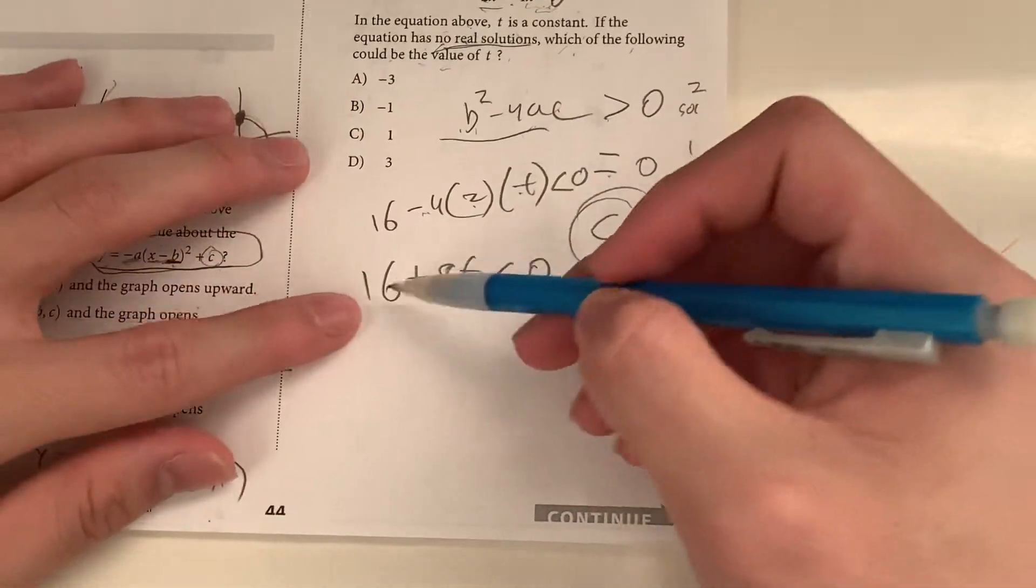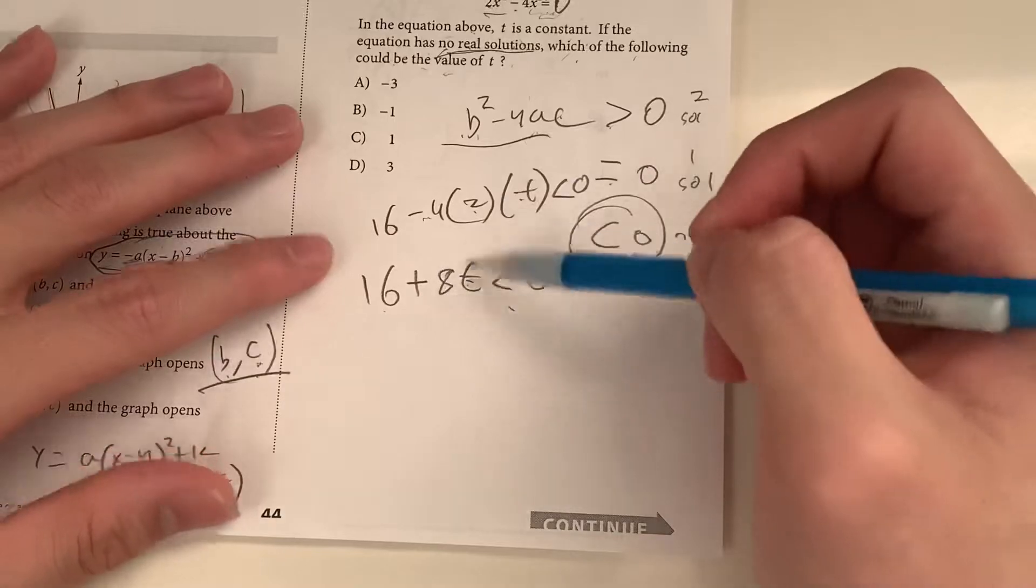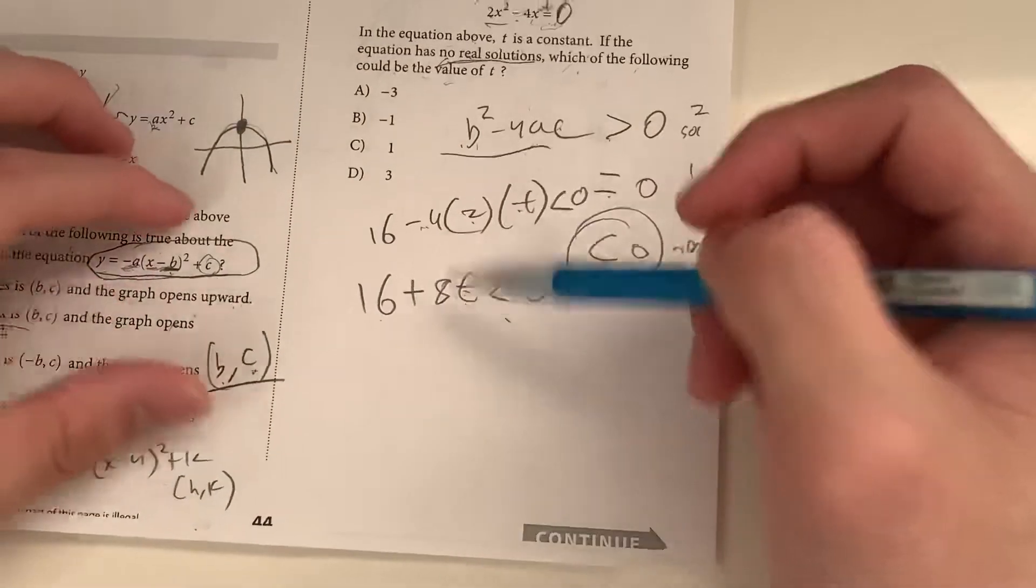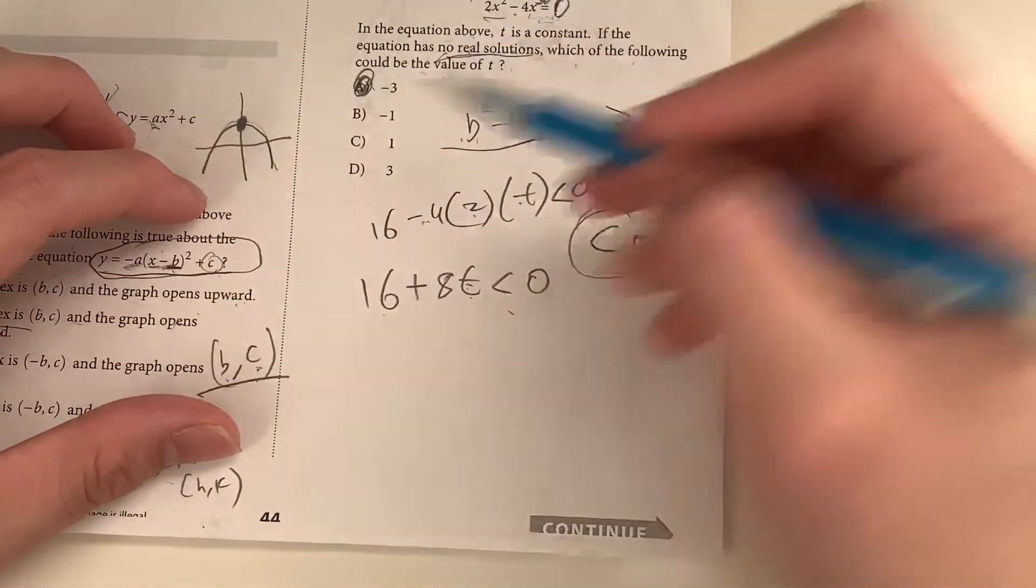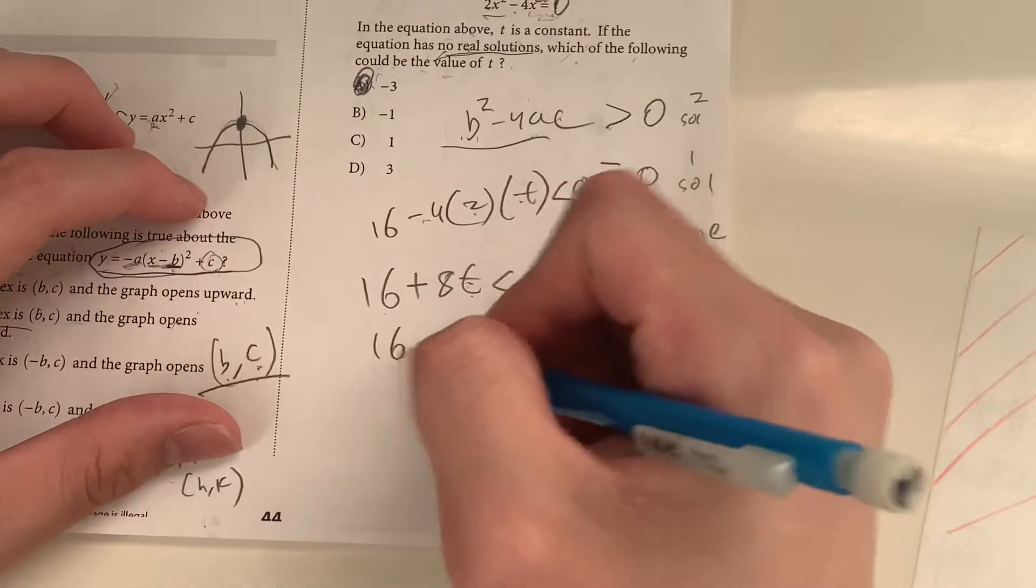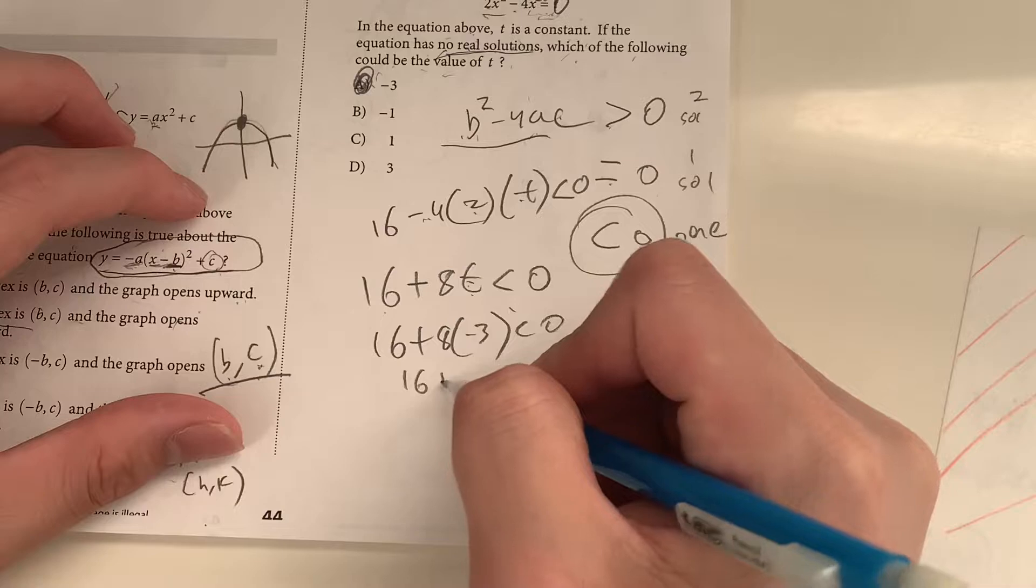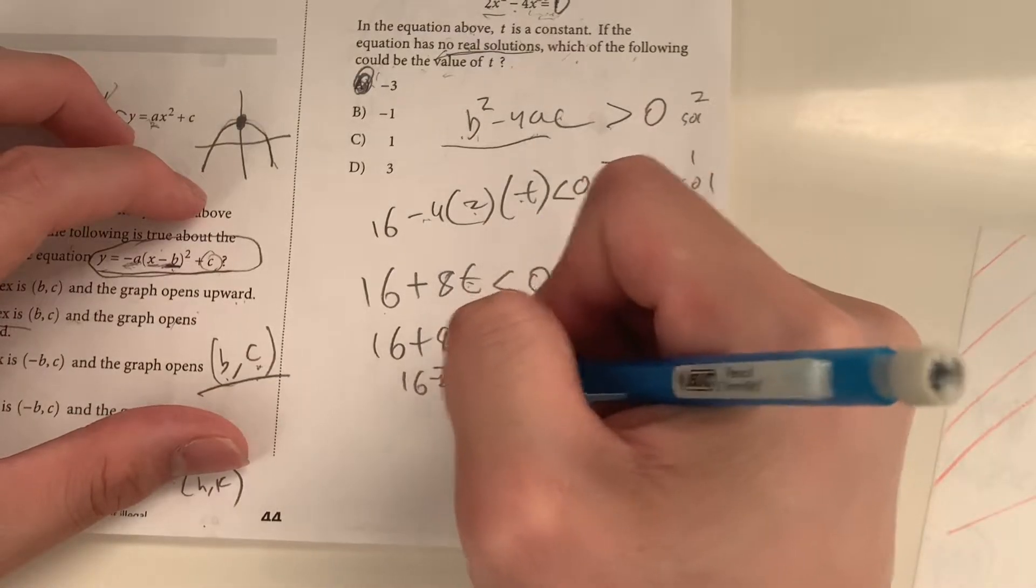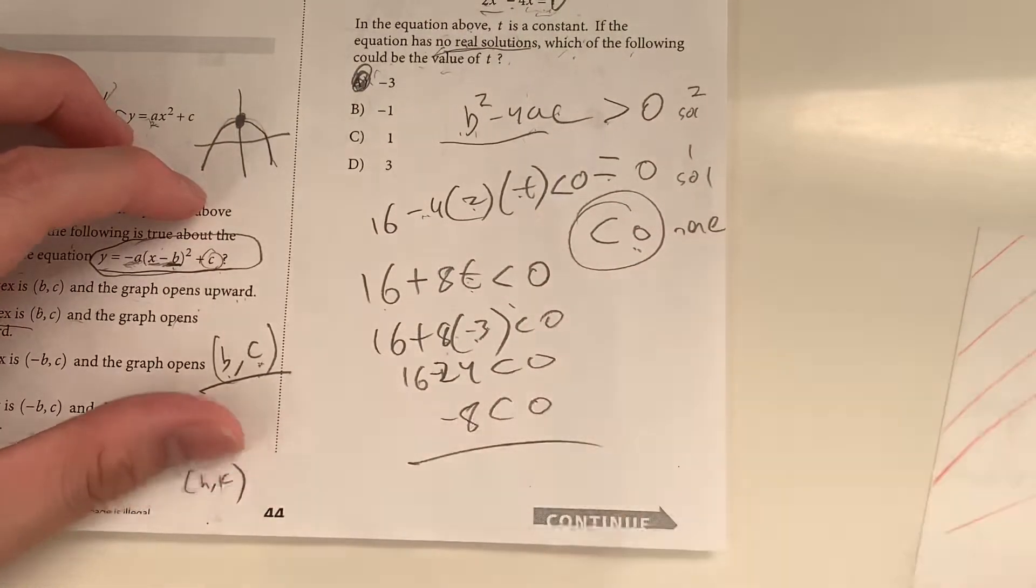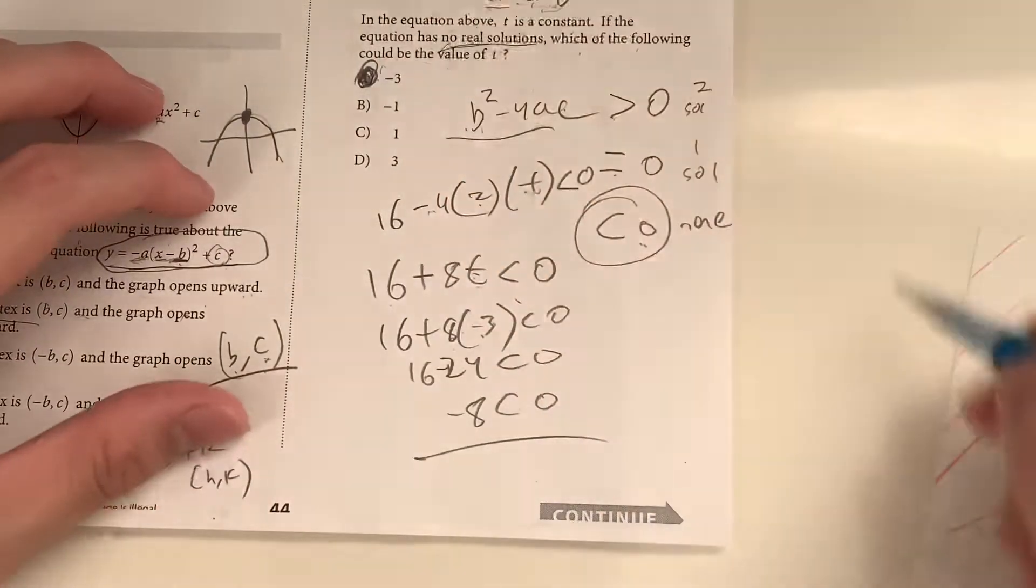I need T to be negative, right? In order to get rid of the 16. Well, there's only one value of T that makes us super negative. It has to be A. Because if we substitute A, it's going to be 16 plus 8 times negative 3 is less than 0. 16 plus, or 8 times negative 3 is negative 24, less than 0. Negative 8 is definitely less than 0. So it has to be A.